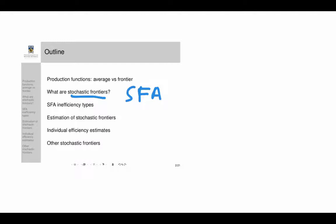We will look at the different inefficiency types: half normal, exponential, and so on. Then we'll discuss briefly how you estimate stochastic frontiers and how you get inefficiency estimates from your estimated models, and what you do when you have not a production function but some other kind of frontier, such as a cost frontier or a profit function frontier.